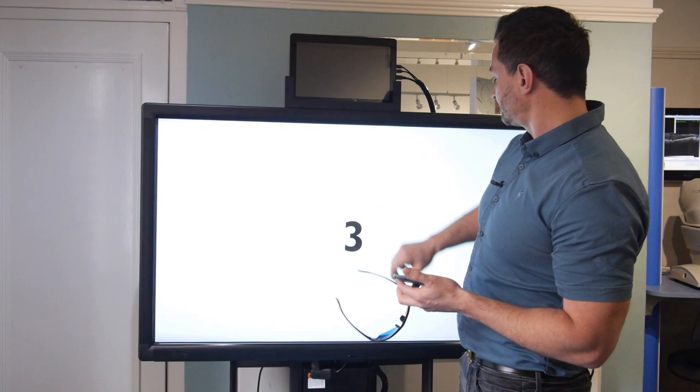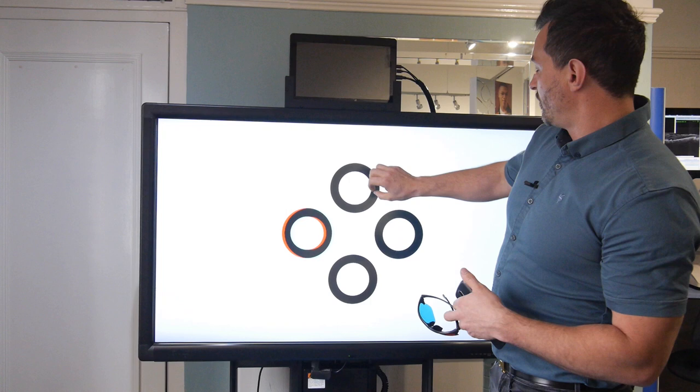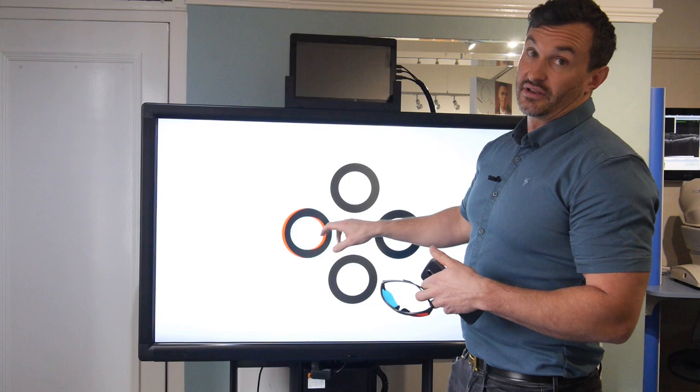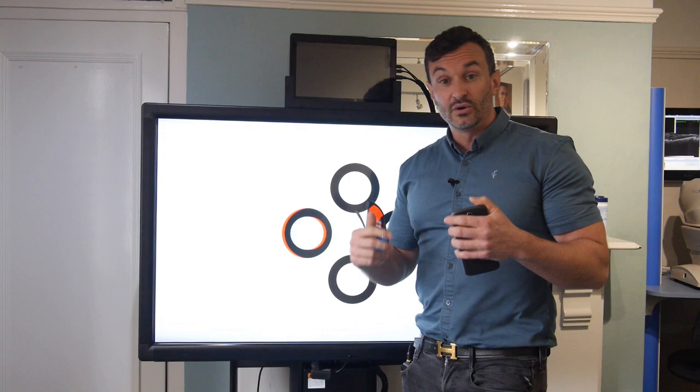So if we just start the test. Okay, so here we can see we've got three rings which are completely black, and there we've got the one ring which has got the red and the blue around it.